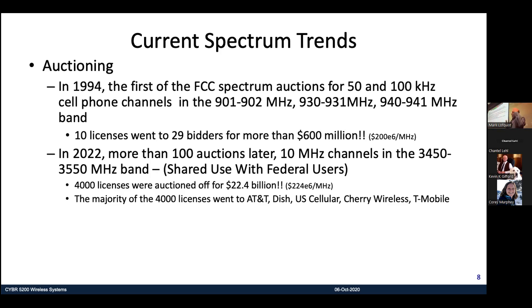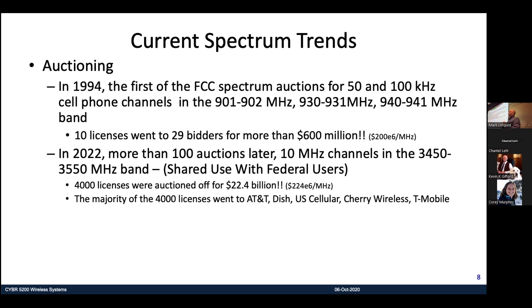By 2022 there had been 100 auctions. For 10 MHz channels, 4,000 licenses were auctioned off regionally by ZCTA — zip code tabulation areas — for $22.4 billion. These are serious numbers, but the ratio holds: it's about $220 million per megahertz at that band as well.